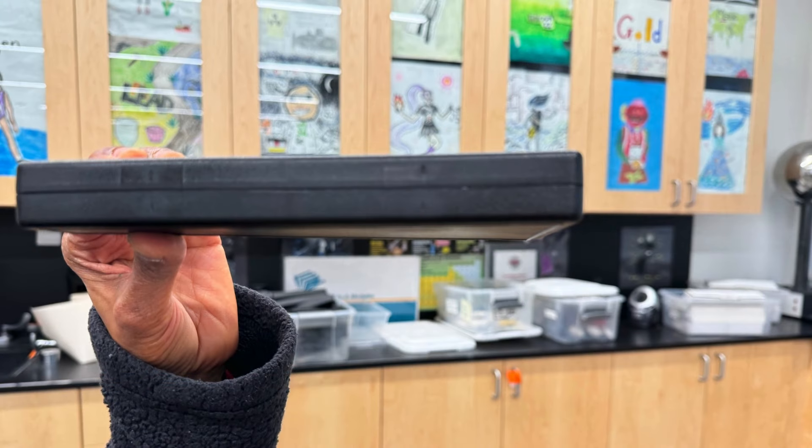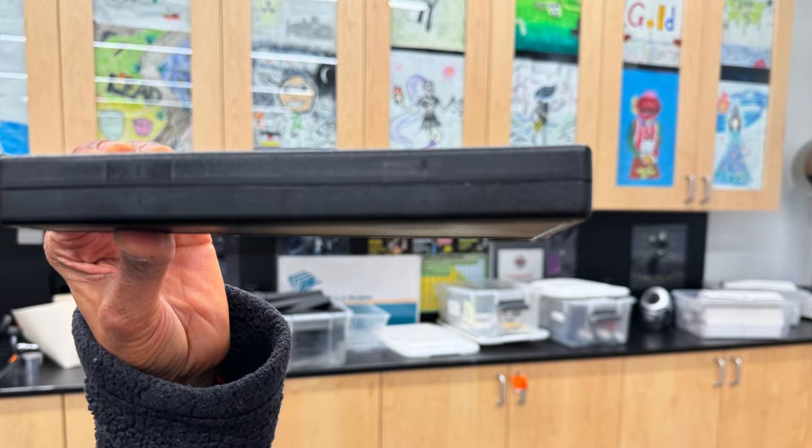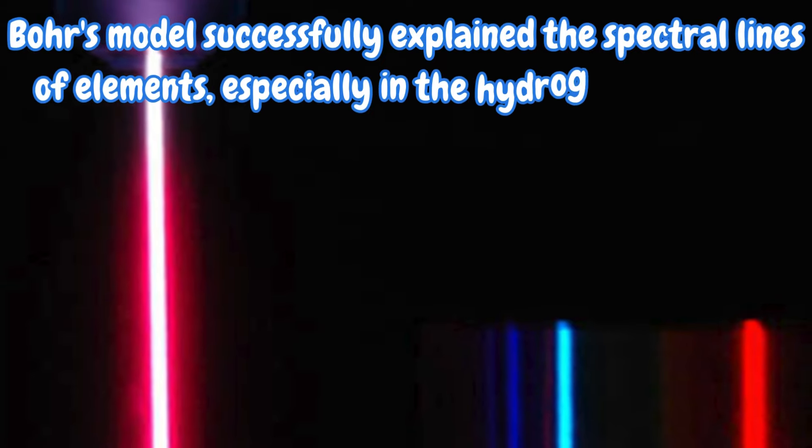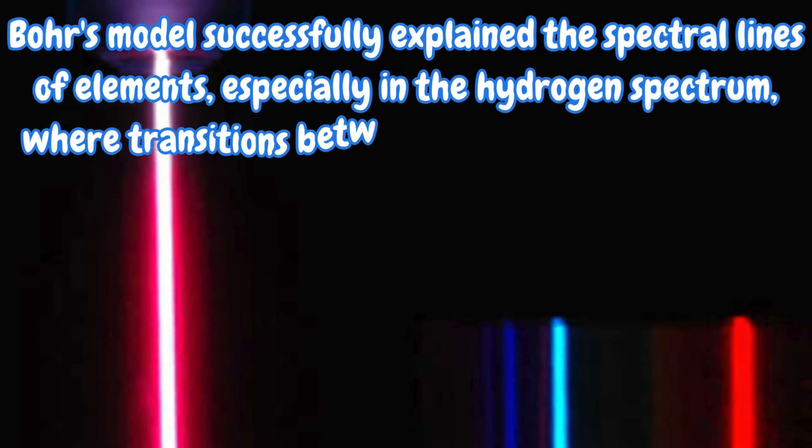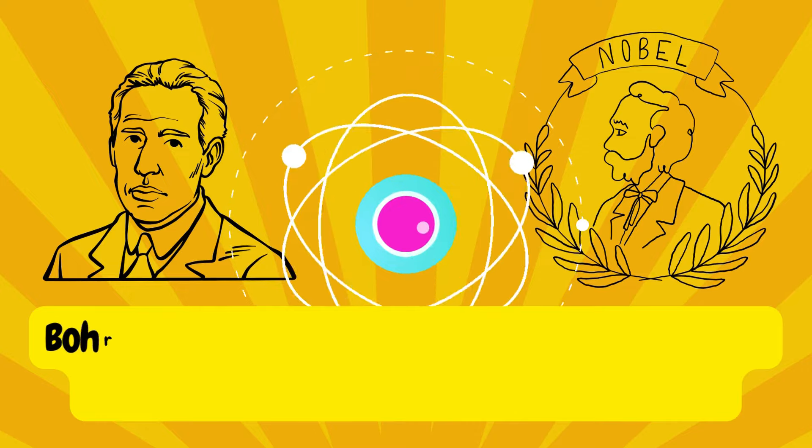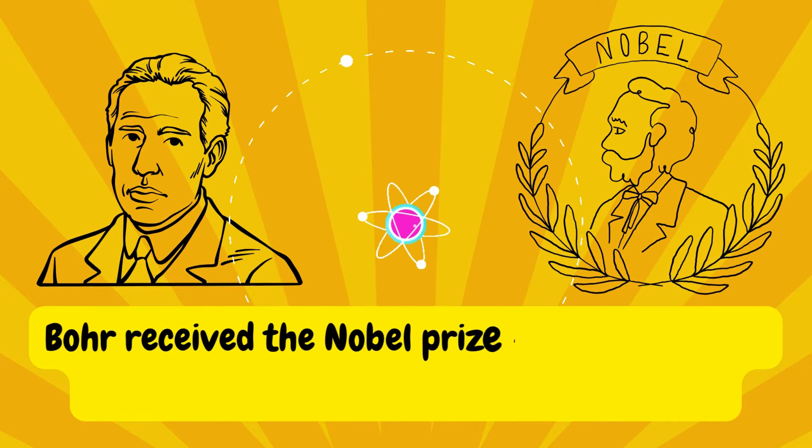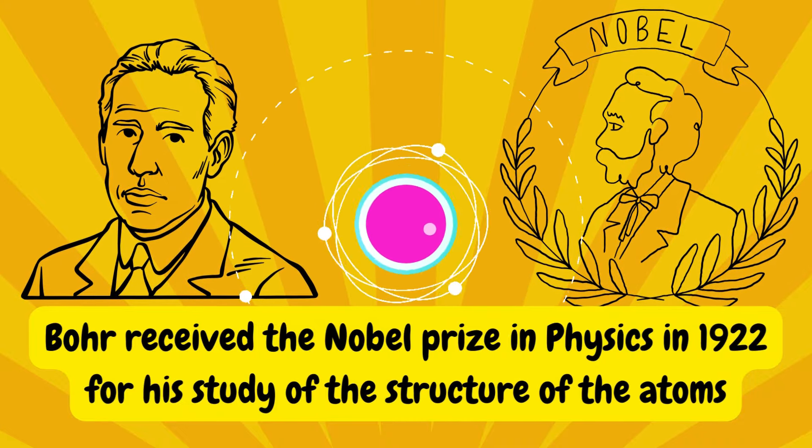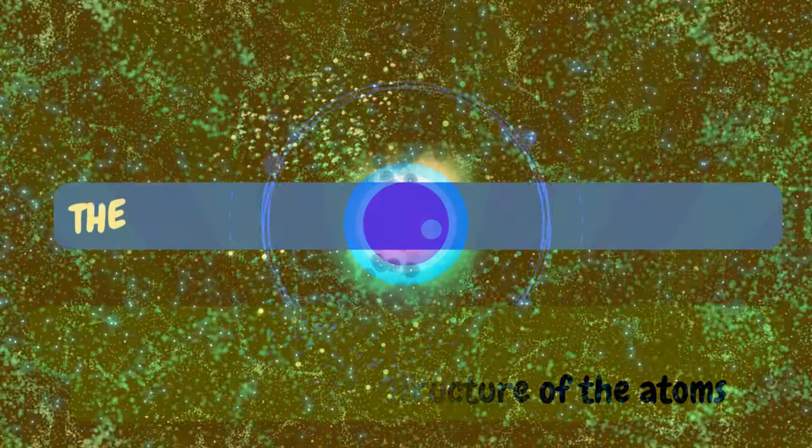Bohr's model successfully explained the spectral lines of elements, especially in the hydrogen spectrum, where transitions between energy levels produced distinct lines. Bohr received the Nobel Prize in Physics in 1922 for his study of the structure of atoms, which explained the emission spectra.